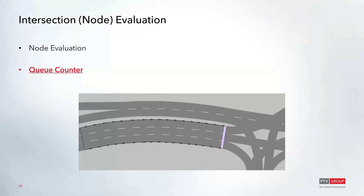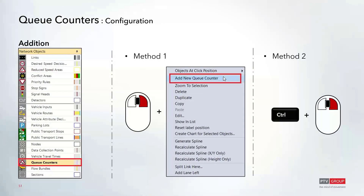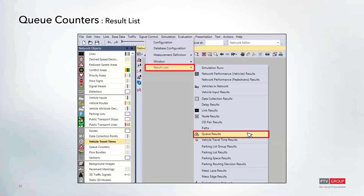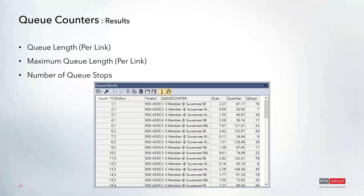For the final intersection evaluation measure, we have queue counters. These are placed on the link itself rather than per lane. Unlike nodes, queue counters collect data for queues that spill back through upstream intersections — whereas nodes stop once they reach the next node, queue counters capture any spillback through intersections. Once queue counters are selected from the network object toolbar, add them via the context menu after right-clicking on the link, or press Control and right-click to place them on a link. Results are stored under the Result List under queue results, produced per link rather than by lane, displaying queue length, maximum queue length, and number of stops.